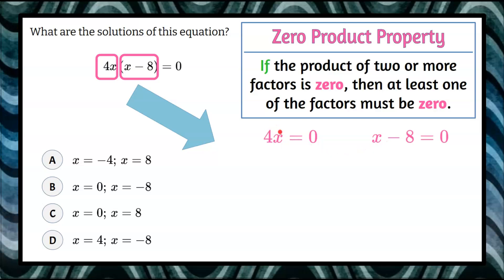4 multiplied by x. To get x alone, we do the inverse of multiply by 4, which is divide by 4. What I do to one side, I must do to the other. 4 divided by 4 is 1, leaving x. 0 divided by 4 is 0, so we get a solution of x equals 0.